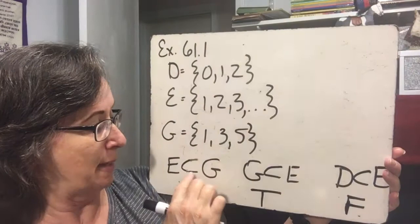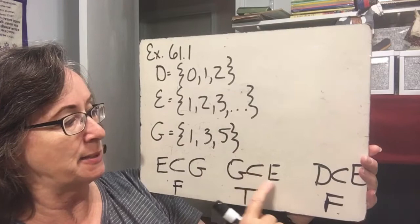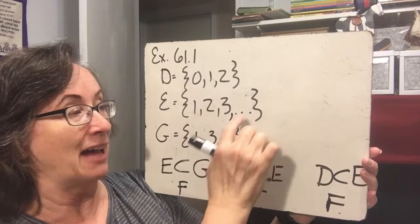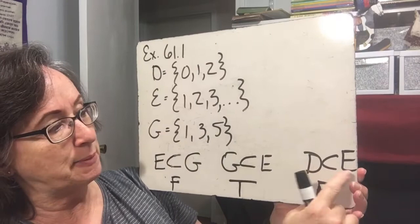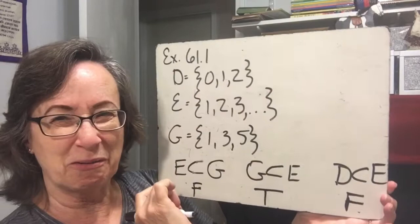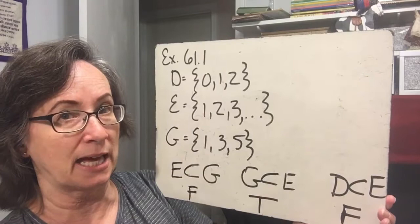Is G a subset of E? G is {1, 3, 5}. E is the set of all natural numbers {1, 2, 3, 4, 5, 6, 7, ...}. I can see 1, I can see 3, and 5 is in there too. So yes, G is a subset of E — that's true. Is D a subset of E? D is {0, 1, 2} and E is {1, 2, 3, ...}. Zero is not in E, and to be a subset every single item must be in the second set. So that is false.